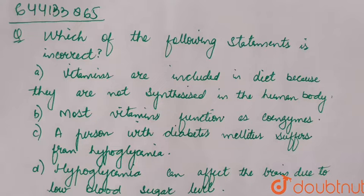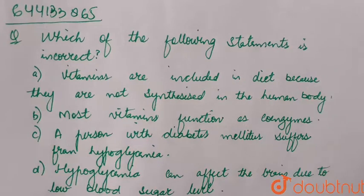The question says: which of the following statements is incorrect? Among the given statements, you have to see which statement is incorrect. The first statement is: vitamins are included in diet because they are not synthesized in the human body.